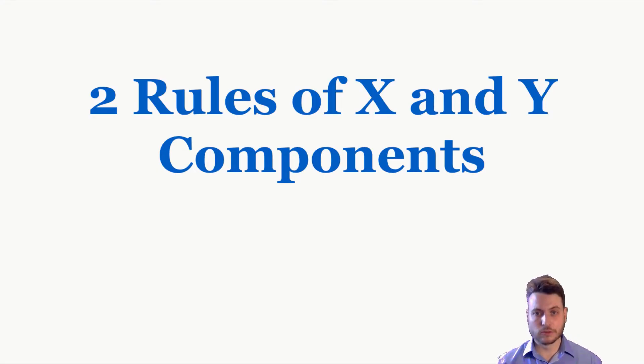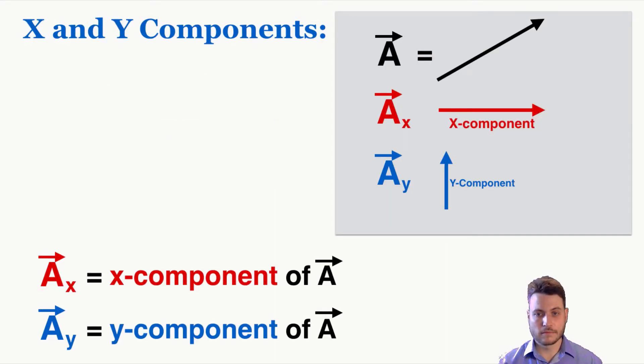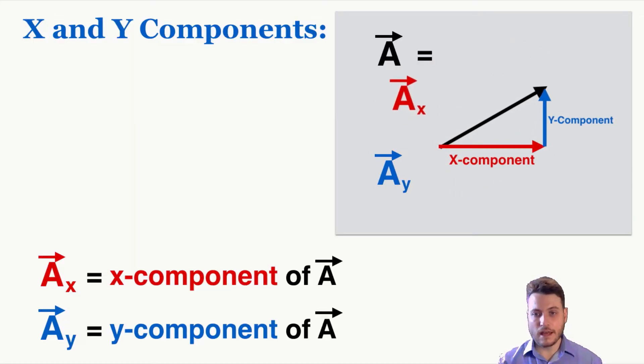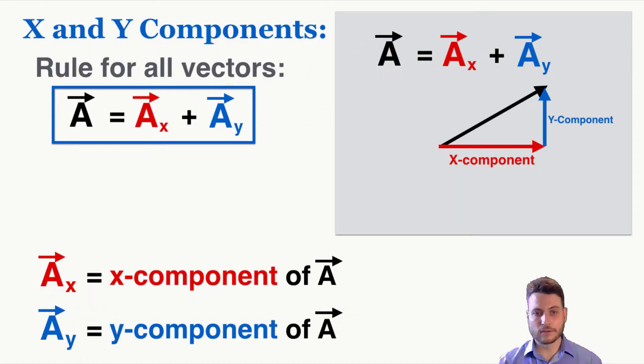There are two general rules for x and y components and how they relate to a vector. You can see first of all that they actually obey the rules of vector addition, the tip to tail method, and the x component plus the y component as vectors. If we're adding them using vector math rather than regular math, the tip to tail method means that the x and y components always add together to be the original vector. So a vector is equal to the sum of its x and y components. So that's the first rule.